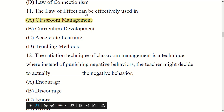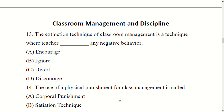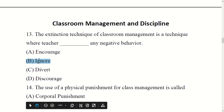The correct answer is option A: classroom management. The extinction technique of classroom management is a technique where the teacher ignores any negative behavior. You have four options: encourage, ignore, divert, and discourage. The right option is B: ignore.